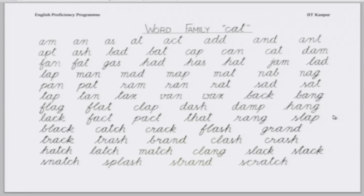Next, Shashank, can you read the third line? Fan, fat, gas, had, has, jam, lad. Mohita, next line? Lap, man, mad, map, mat, nap, nag.